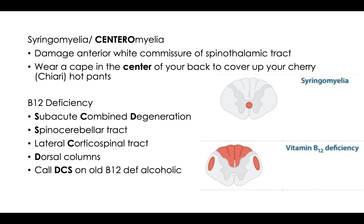Next we have vitamin B12 deficiency. This one involves all of DCS — dorsal column, corticospinal tract, and spinothalamic tract. They call it subacute combined degeneration, which has S, C, and D. Think of a B12-deficient alcoholic patient — we're calling DCS on them, like the Department of Child Services. You can also just look at the picture and see the D, C, and S all being affected. That's one of the most high-yield ones — they love to ask about vitamin B12.